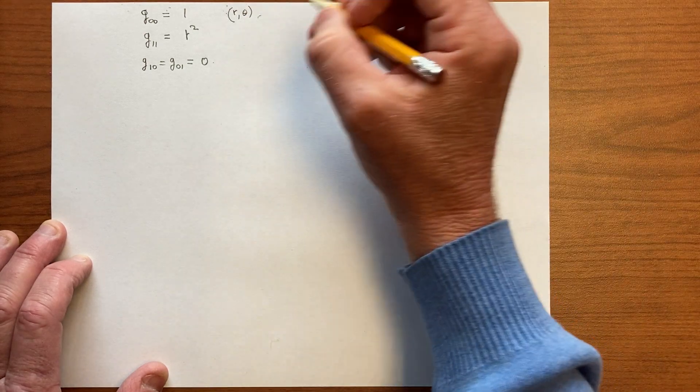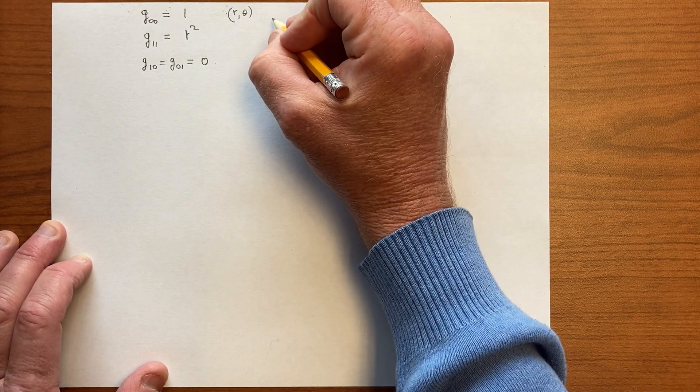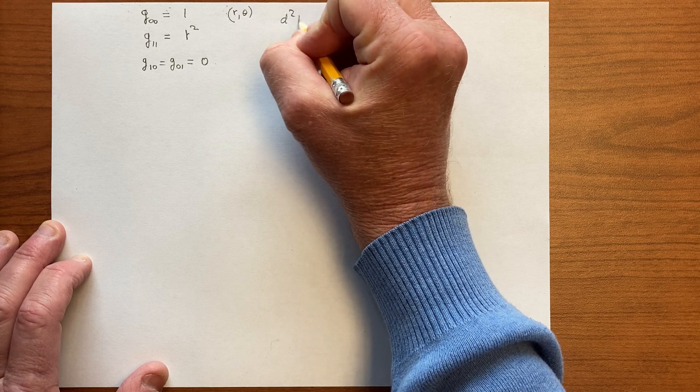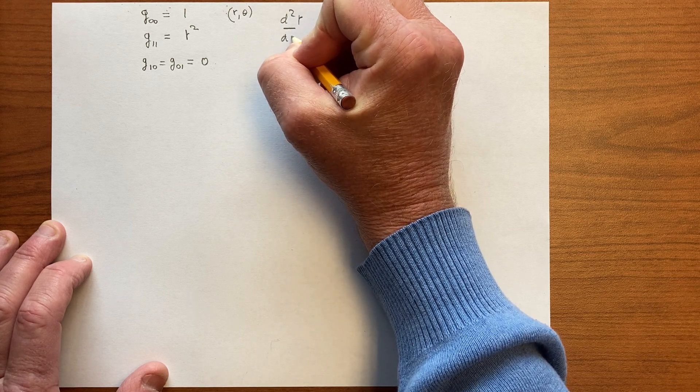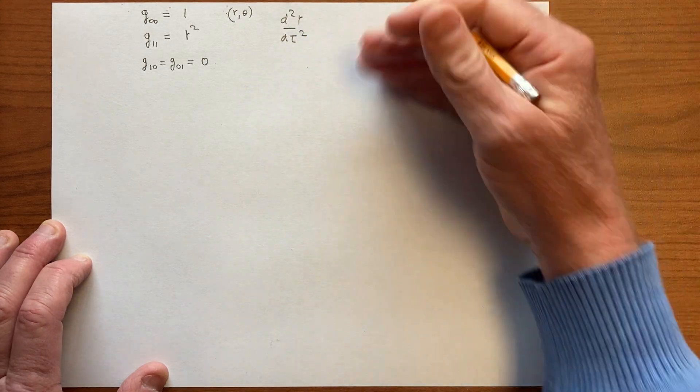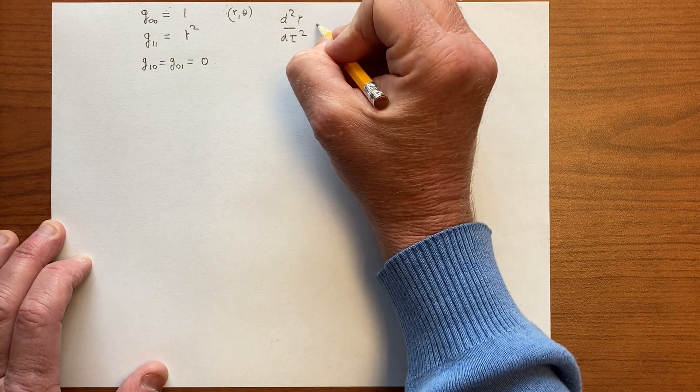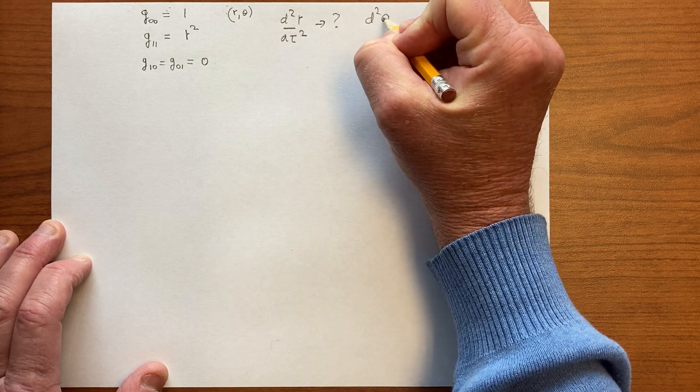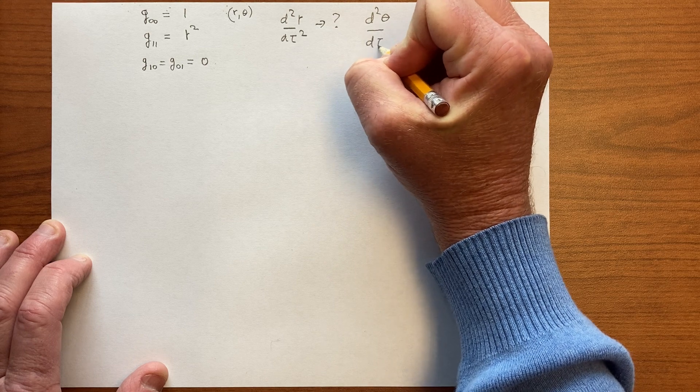And we will derive the second derivative of r, and let's just use tau, but you can think of it as some parameter, it could just be the regular time. What does that look like, and what does the second derivative of theta look like?